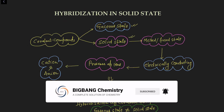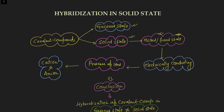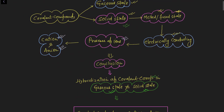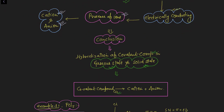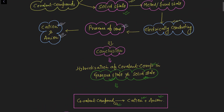When solid state compounds are melted and fused, it was experimentally found that the compound was electrically conducting in melted or fused state. We know that if any substance is conducting current, there is a presence of ions — cations and anions. So the conclusion is that covalent compounds in solid state consist of cations and anions, and their hybridization in gaseous state and solid state are not equal.